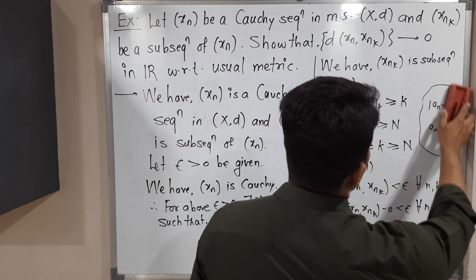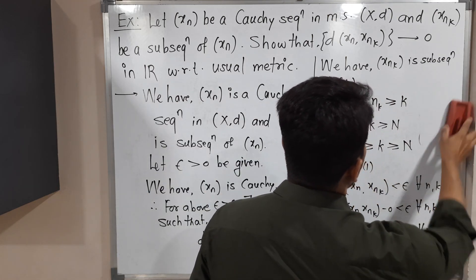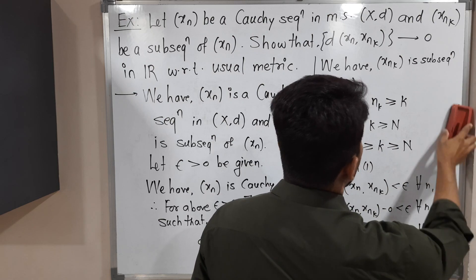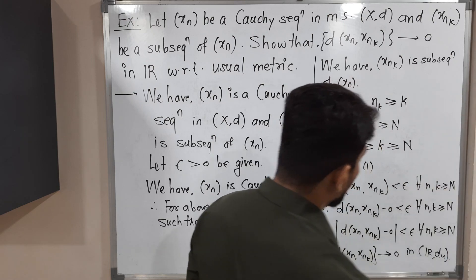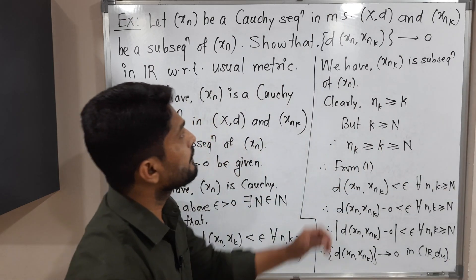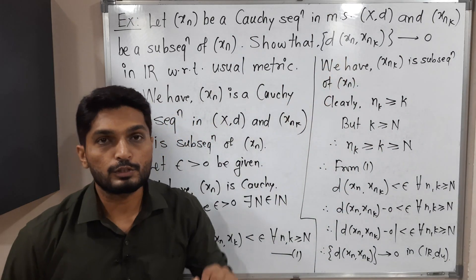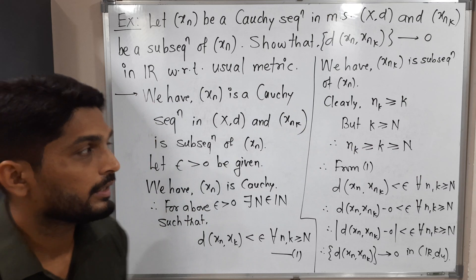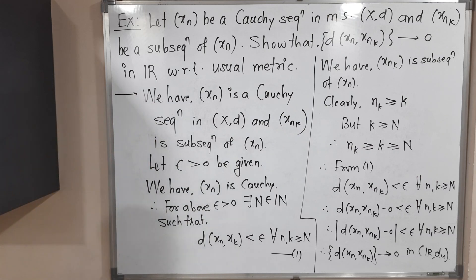In this way, we proved that the sequence d(xn, xnk) converges to 0 in ℝ with the usual metric. The example is over. Thank you. See you.